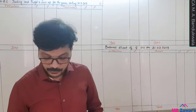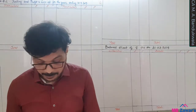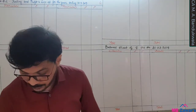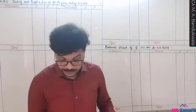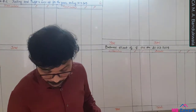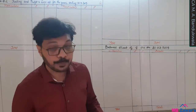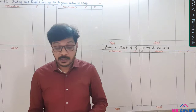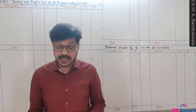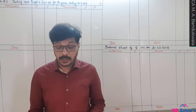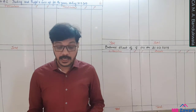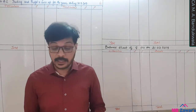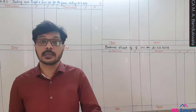Good morning friends. Today we are going to start with problem number 2. Refer to question sheet: final account of sole proprietor, problem number 2. From the following particulars extracted from the books of G, prepare trading and profit and loss account and the balance sheet as at 31st March, after making the necessary adjustments.